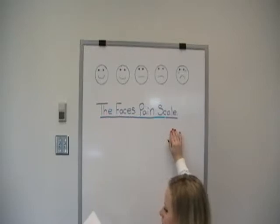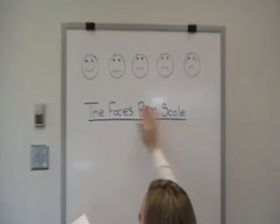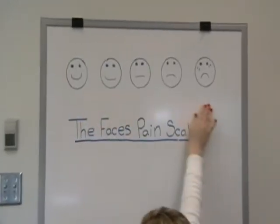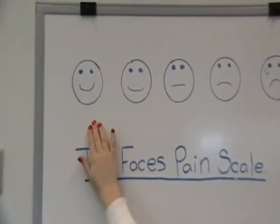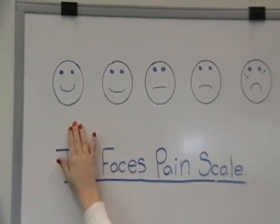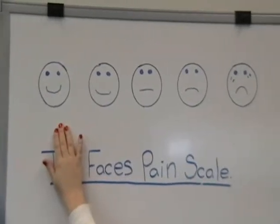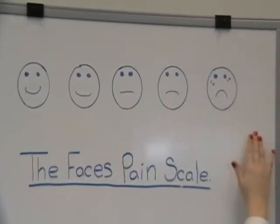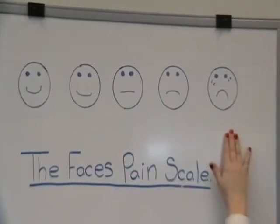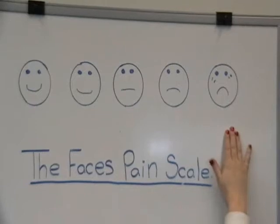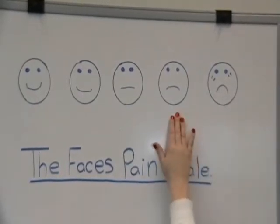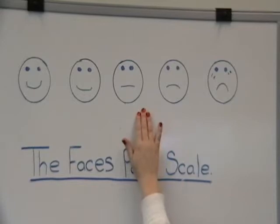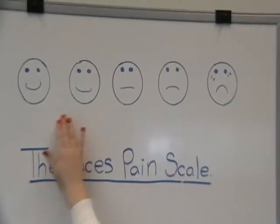The Faces Scale is a scale with five faces ranging from a very happy face, indicating the child is in no pain, to a very unhappy, sad face, indicating the child is in a lot of pain. The child is asked to point to the face that best demonstrates their pain.